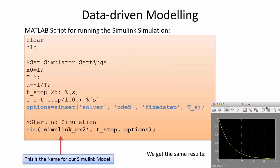Next we create a MATLAB script where we enter the simulation parameters. We use the simset function to specify the solver type, time interval, and sampling time, and then the sim function to start the simulation. The first parameter of sim is the name of the Simulink model, followed by the stop time and the options from simset.